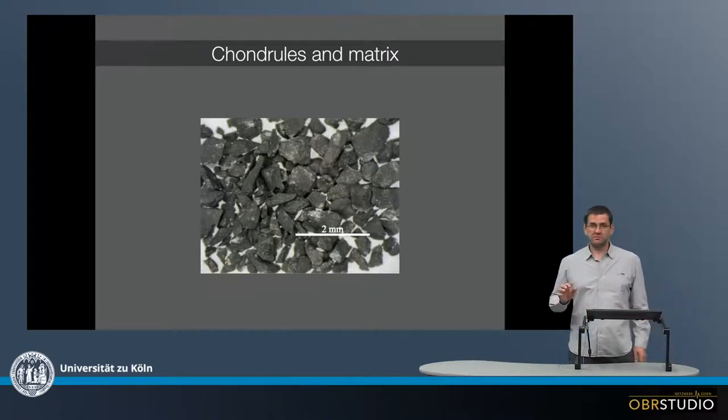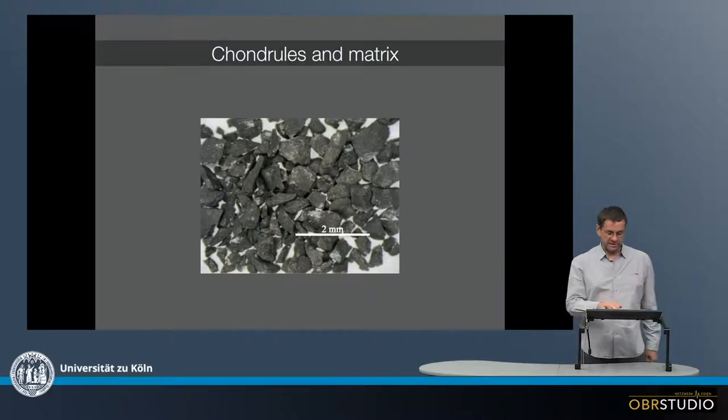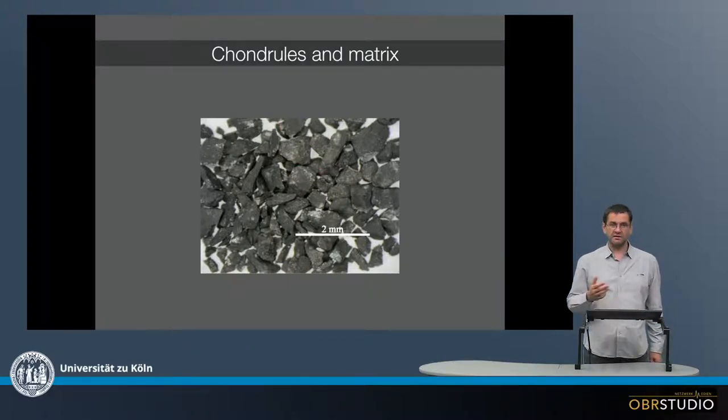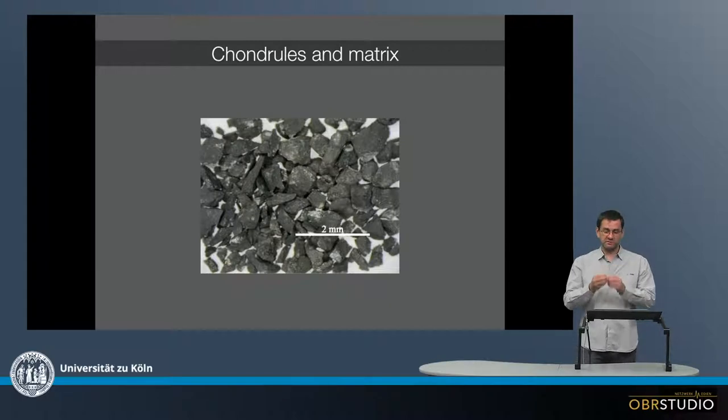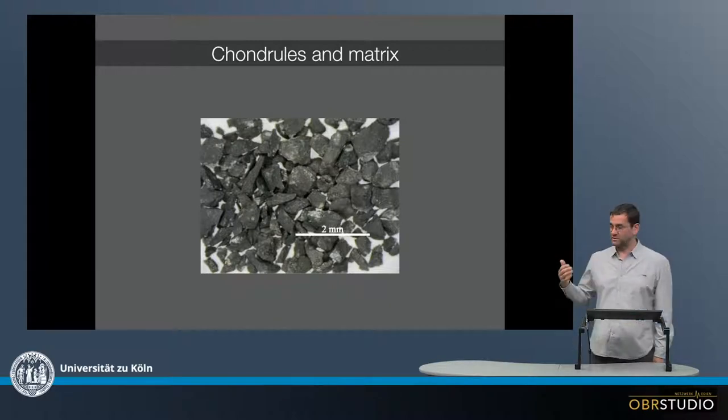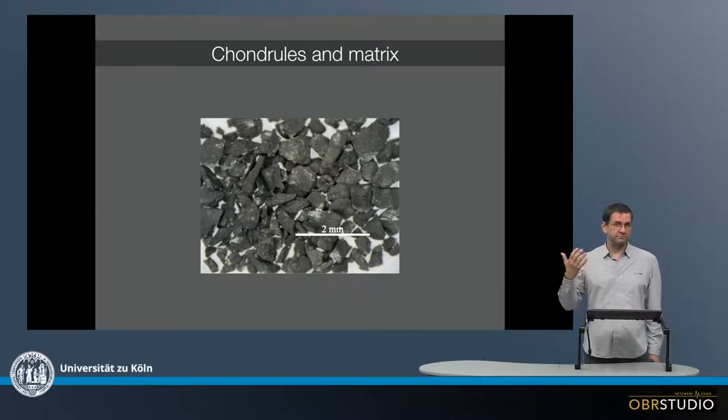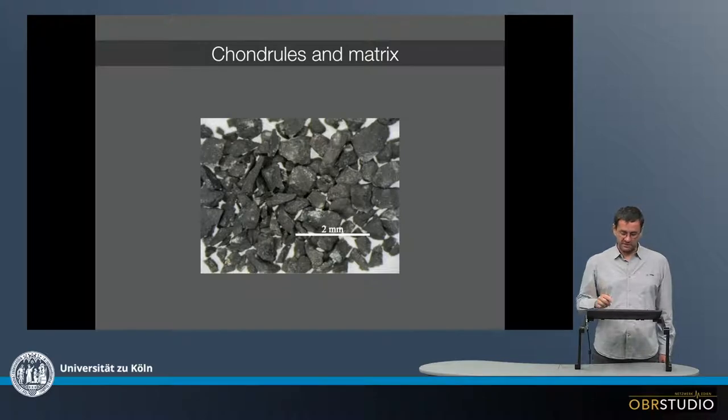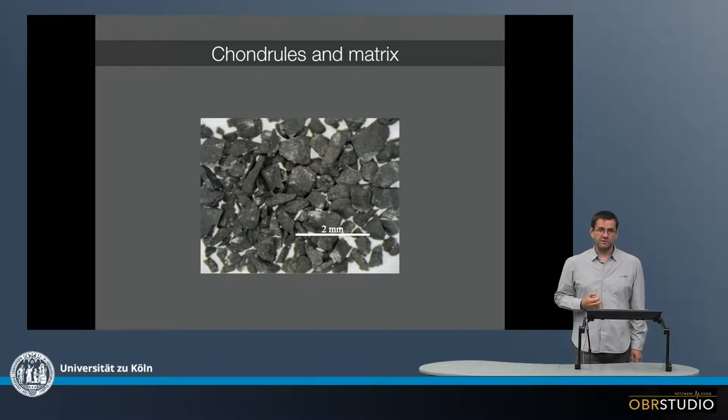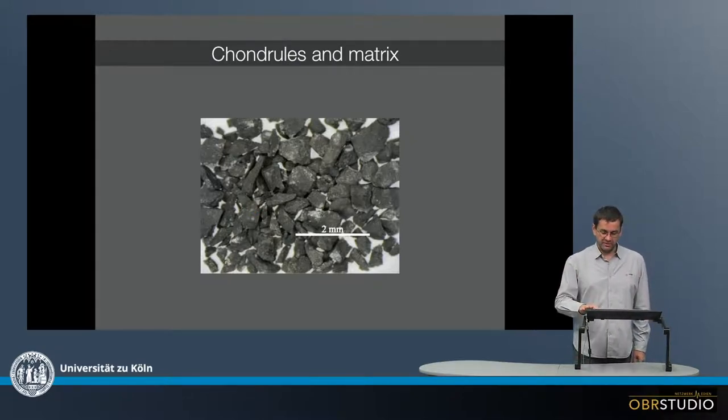Now this first image here is not a high-resolution image of a matrix. These are all individual pieces under the light microscope broken from a meteorite, just to illustrate how the matrix looks like. So each of these little bits, or broken bits, consists of thousands or millions of very tiny matrix grains.